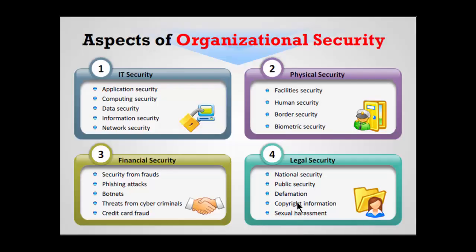The aspects of organizational security include: physical security, IT security, financial security, and legal security. IT security is further divided into five areas: application security, computing security, data security, information security, and network security. If an organization takes care of all these levels, its IT infrastructure can be considered highly secure.